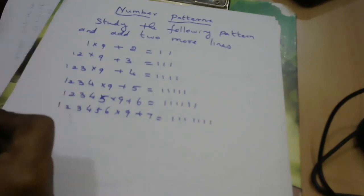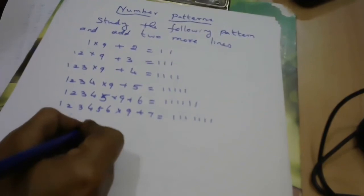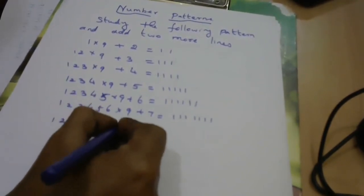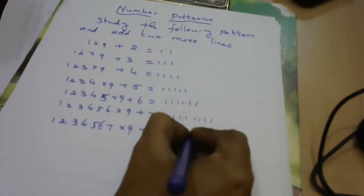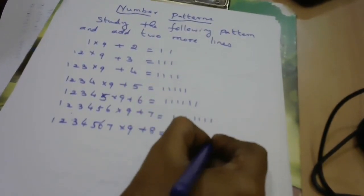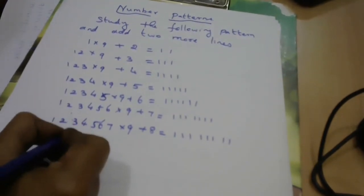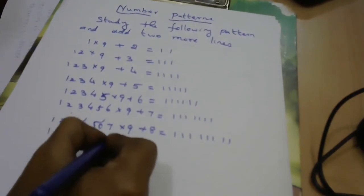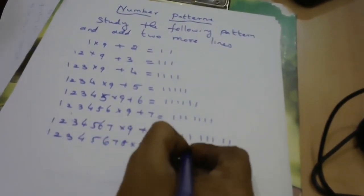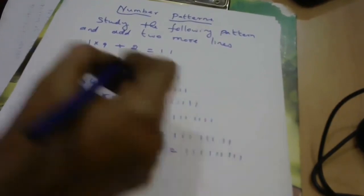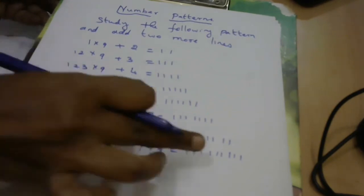So the next step would be: 1234567×9+8, which gives eight ones — 11111111. And one more step after that: 12345678×9+9, which gives nine ones — 111111111. You can verify this using a calculator and get the same answer.